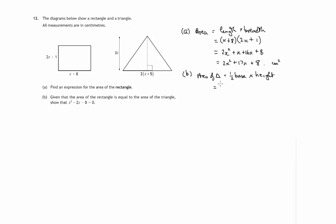So it's a half of the base is 2 lots of x plus 5 units, centimeters. That's the base. So it's a half of 2x plus 5 times the height, which is 3x.